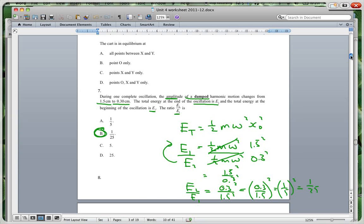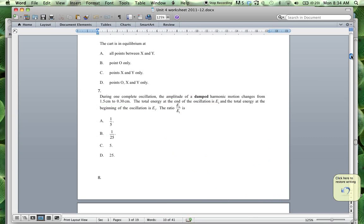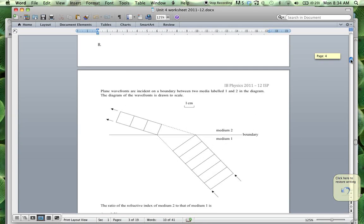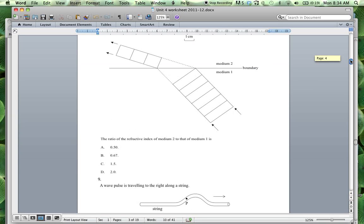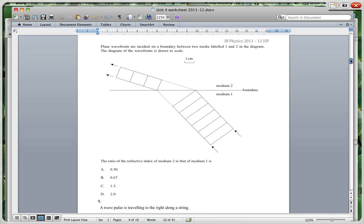Again, very important. What is your defining equation? Look at that and work with that. Really important to do that. Going on to question 8. This is quite a big question. I'm not sure if I'm going to fit it all on here. Oh, there we are. I can do it. So, it says, These plane waves travel are incident on a boundary between two media labelled 1 and 2 in the diagram. The diagram of the wave fronts is drawn to scale. So, we've got these as 1 cm is that distance over there. The ratio of the refractive index of the medium 2 to that of medium 1 is.